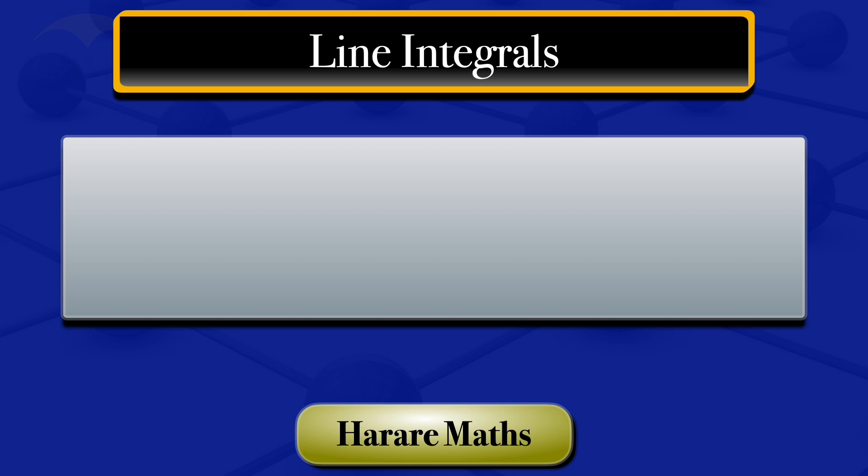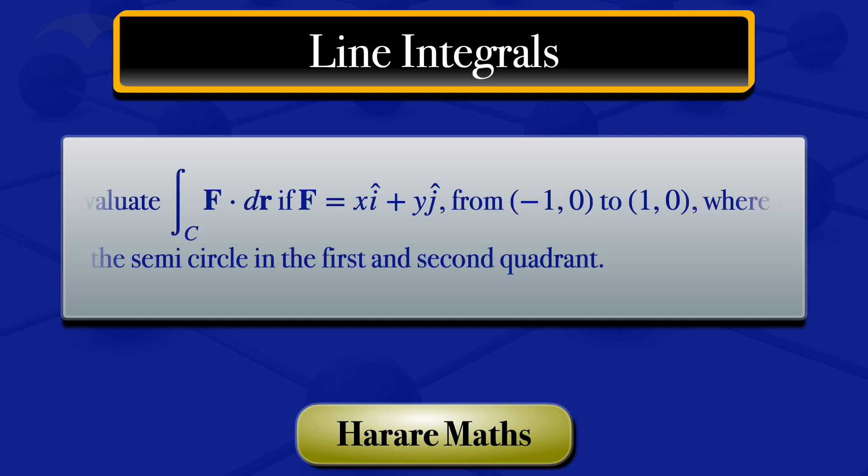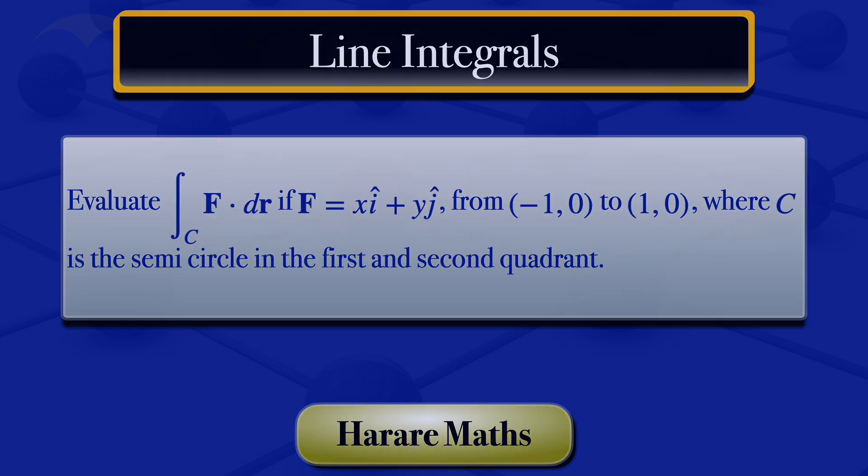In this tutorial, we are going to evaluate the integral of f·dr along the curve C, where f is the vector field xi plus yj, from the point minus 1, 0 to the point 1, 0, where C is the semicircle in the first and second quadrant.